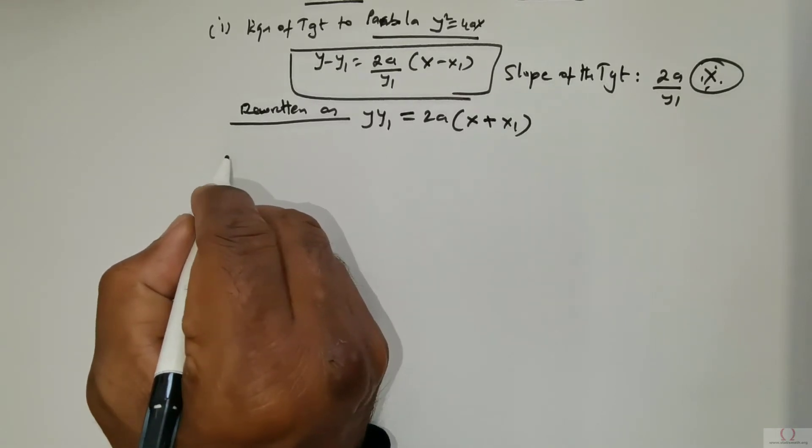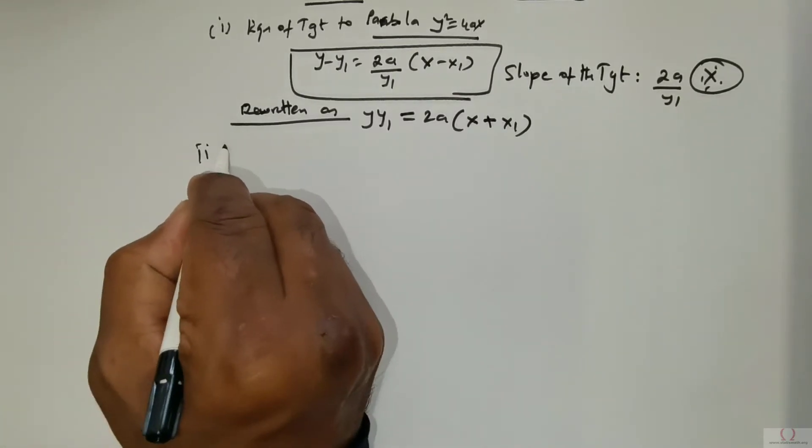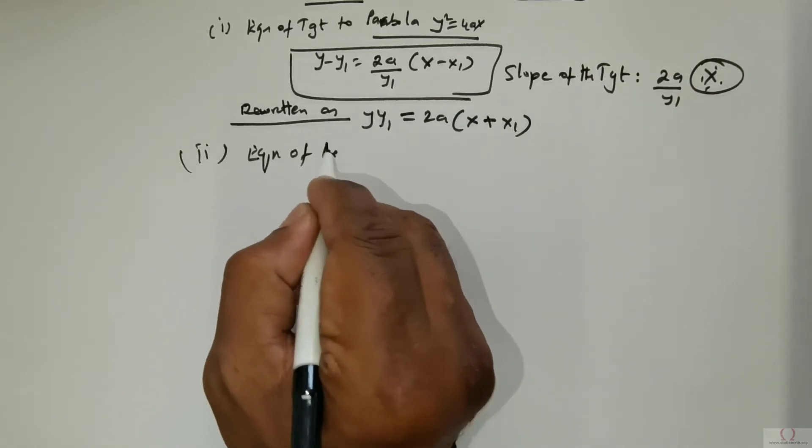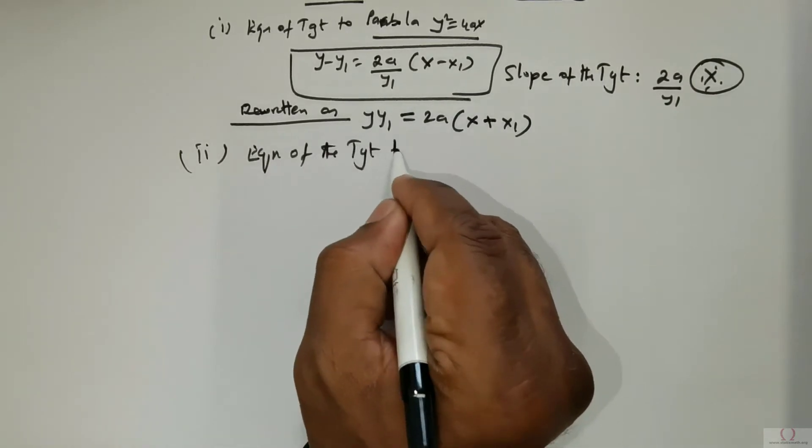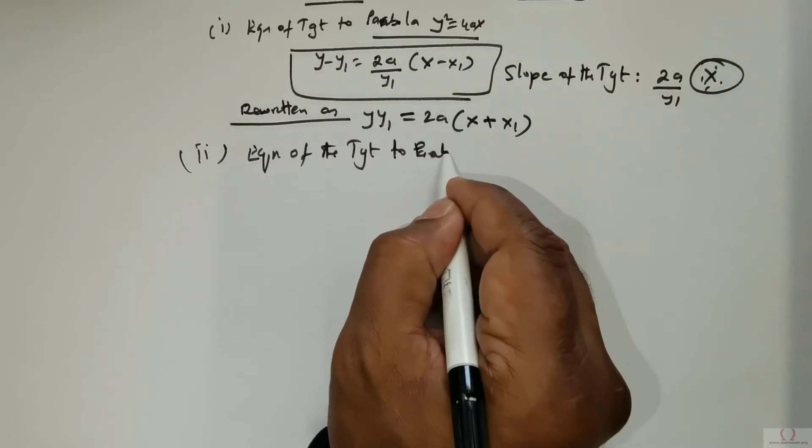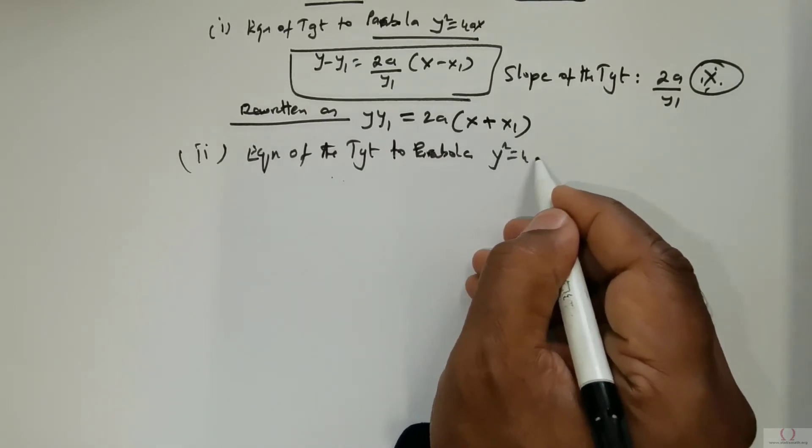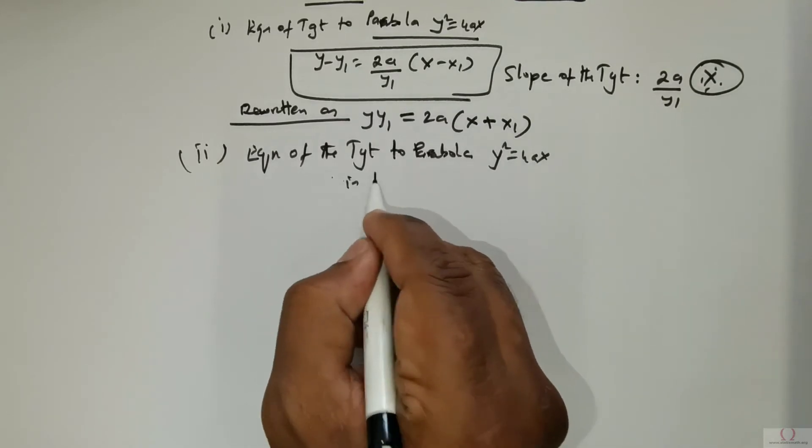Now there is the next one you got to know, which is the equation of the tangent to parabola y² = 4ax in parametric form.